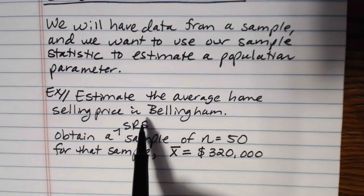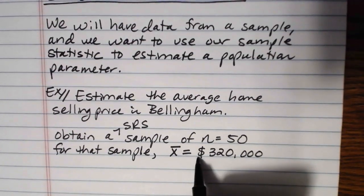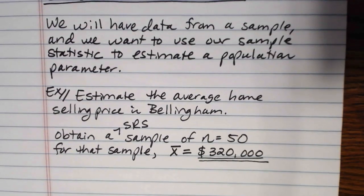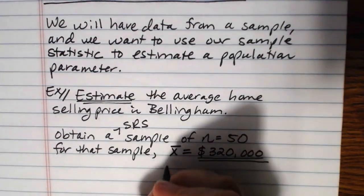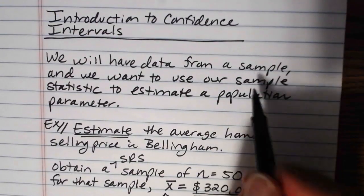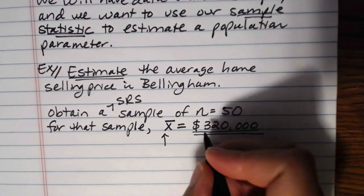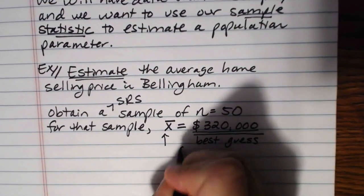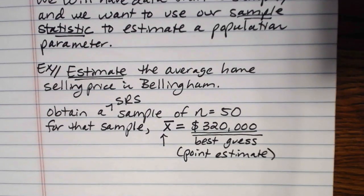Now, assuming that I have selected my sample using an appropriate sampling method, in this case, a simple random sample, it is reasonable to assume that this average of the sample should be pretty close to the actual true population average. It would be rare for it to be exactly the same, for the actual population mean selling price of all homes in Bellingham to be exactly $320,000, but it should be pretty close to this. And so what we do when we're estimating this average home selling price, we use the sample statistic as a best estimate for the population value. So this $320,000, that's our best guess, which is also called a point estimate.